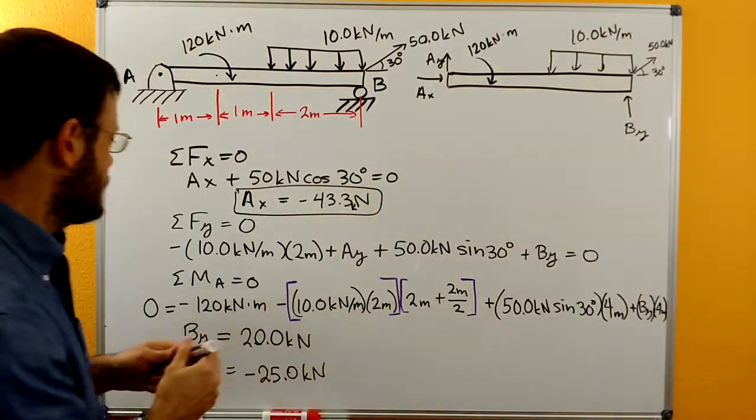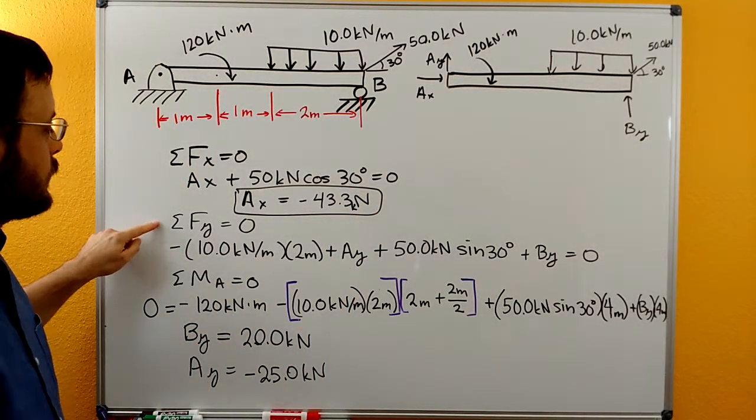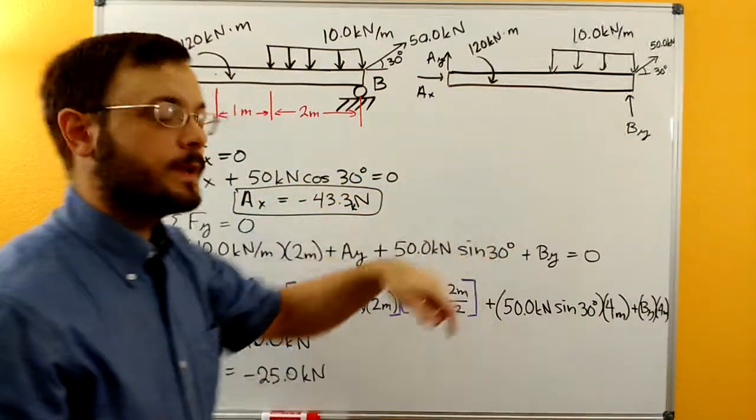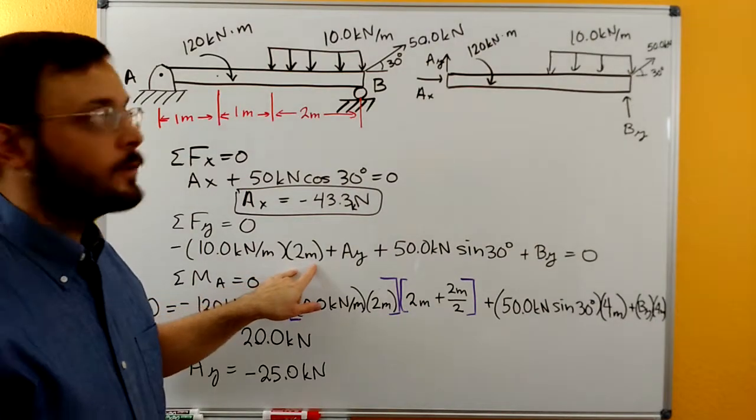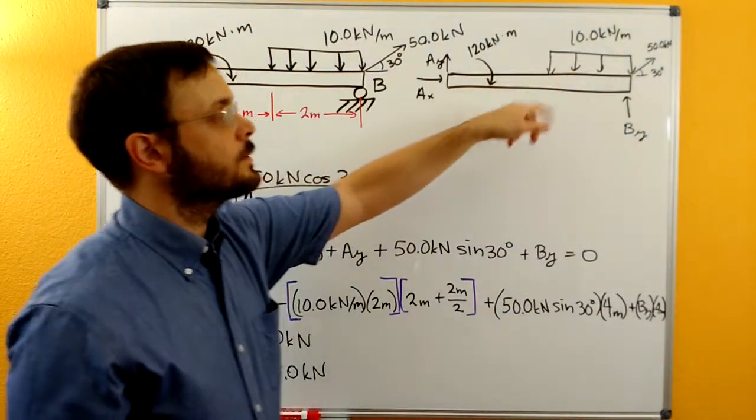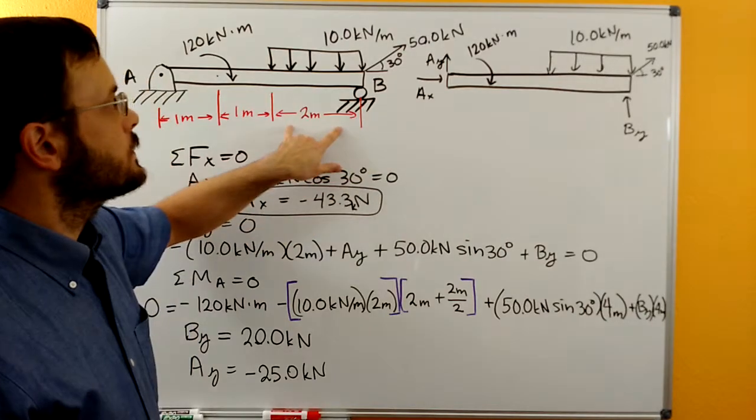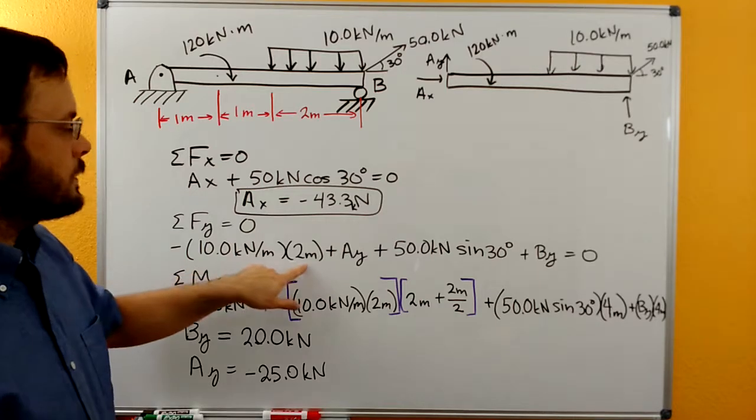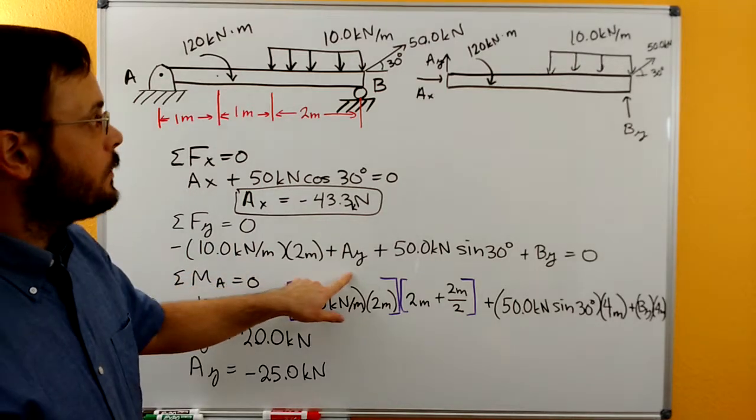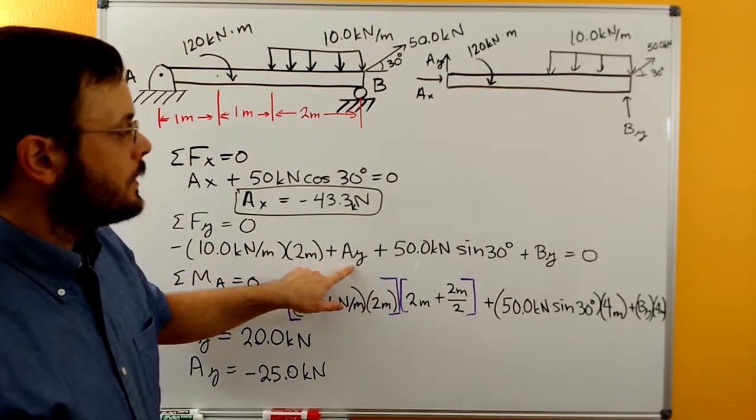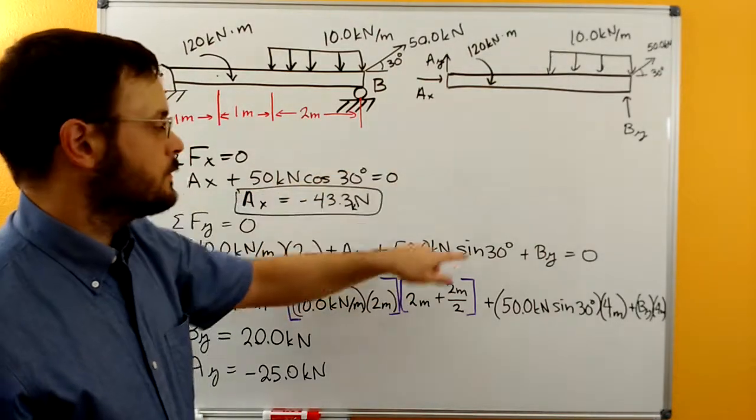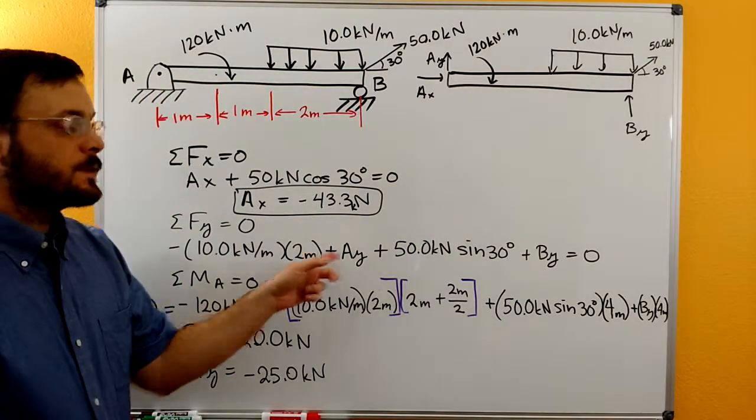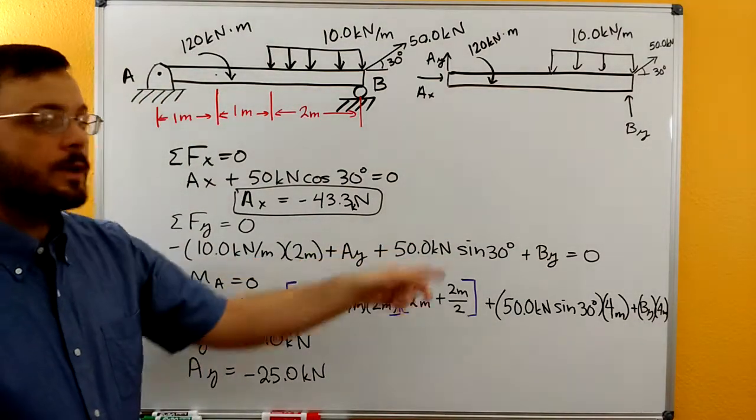And we can do our sum of forces in y. We get our negative 10 kilonewton per meter for a distributed load. Since that's a rectangular load, the area under it is just going to be the base, which is our 2 meters times the height, which is our 10 kilonewton per meter. So there's our 10 kilonewton per meter times our 2 meters, our AY from the reaction there, the y component of the 50 kilonewton force, and then plus BY. We can't solve this equation directly because we have two unknowns, AY and BY.